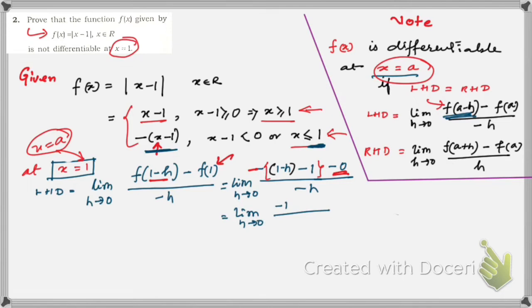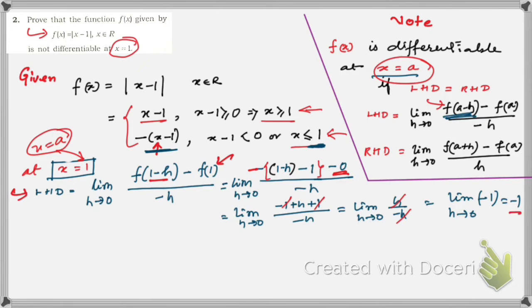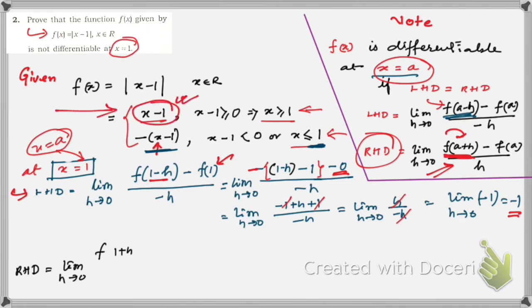Opening the bracket in the left-hand derivative: limit h→0 of [h − 0] / (−h) = limit h→0 of h/(−h) = −1. So the left-hand derivative equals −1. For the right-hand derivative, we use limit h→0 of [f(1+h) − f(1)] / h, taking the expression (x − 1) since x > 1.